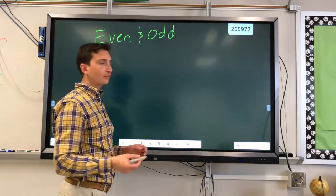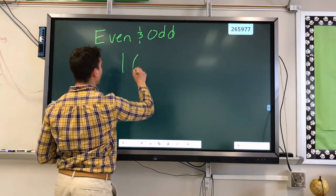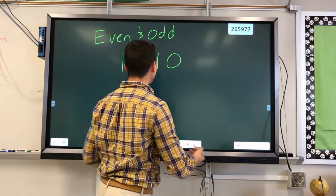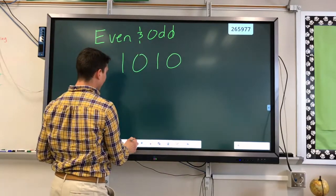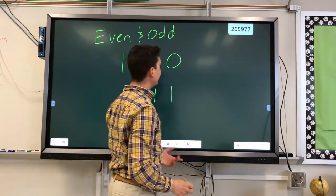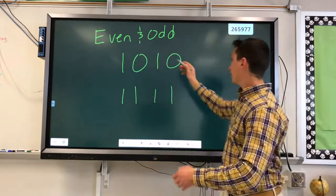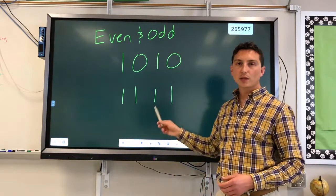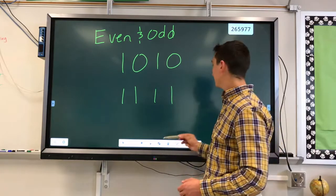So last time we looked at a few different numbers. This was 1, 1, 0, 1, 0, and we learned that equals 10, and let's say we have a different number, 1, 1, 1, 1. So we learned this last time this equals 10, and this right here, I said last time, equals 15.